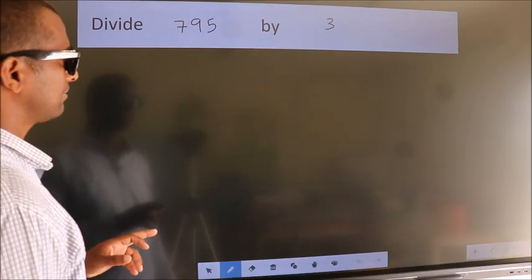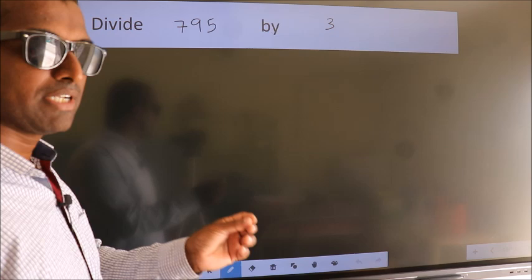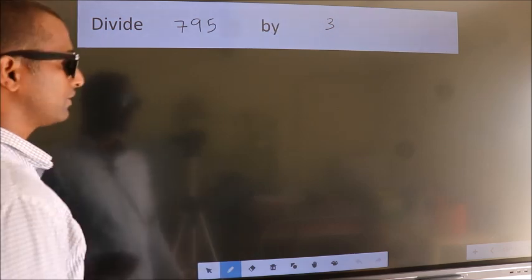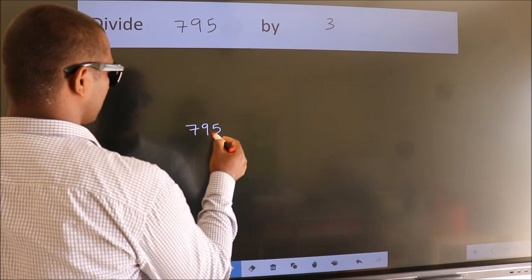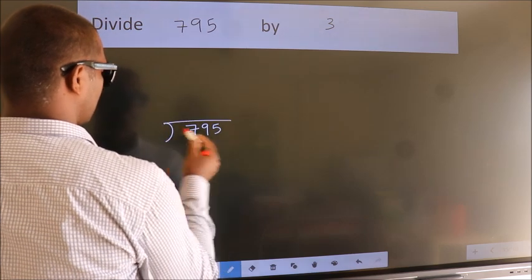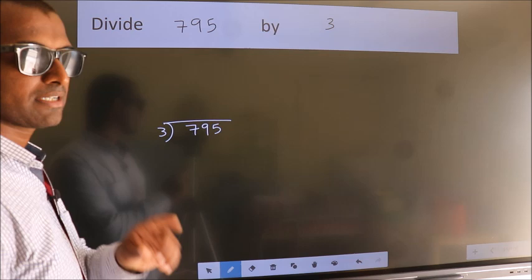Divide 795 by 3. To do this division, we should frame it in this way. 795 here, 3 here. This is your step 1.